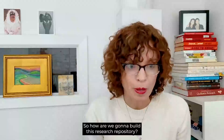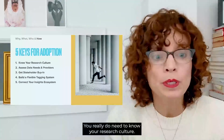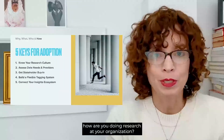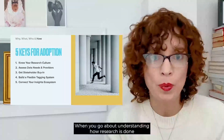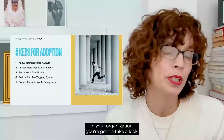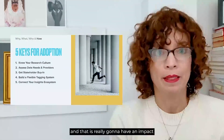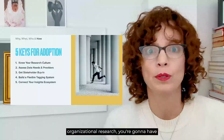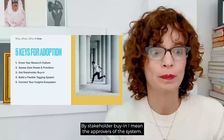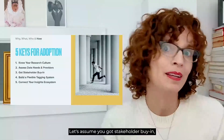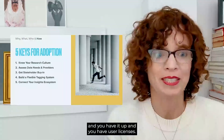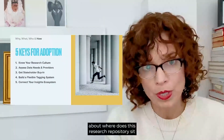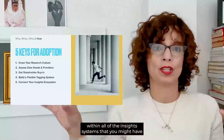So how are we going to build this research repository? These are the five keys for adoption. You really do need to know your research culture — how are you doing research at your organization? Then assess your data needs and providers, because what kind of data they're collecting will have an impact on what providers you choose. Once you've done that organizational research, you'll need to get stakeholder buy-in from the approvers of the system. Then you need to create a tagging system that your entire organization can make use of. And finally, think about where this research repository sits within all of the insight systems you might have within your organization.